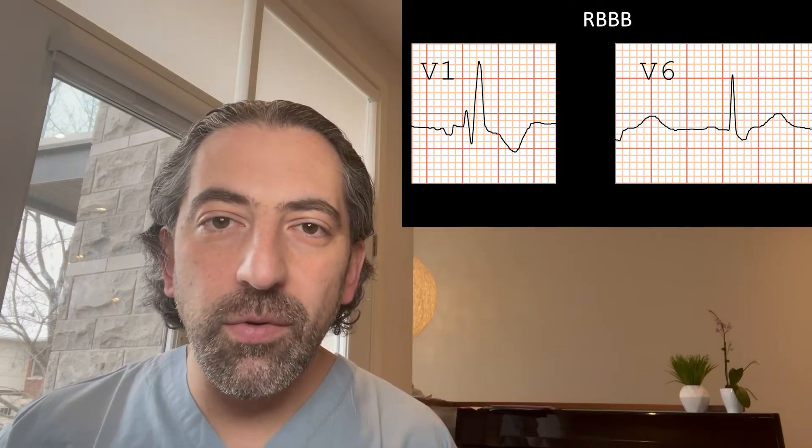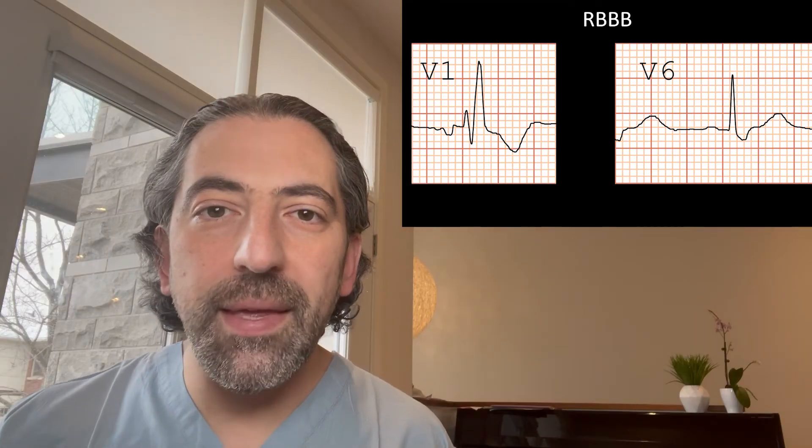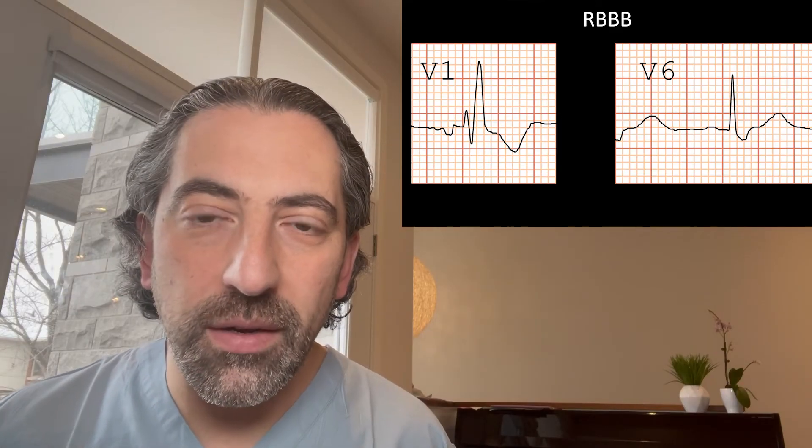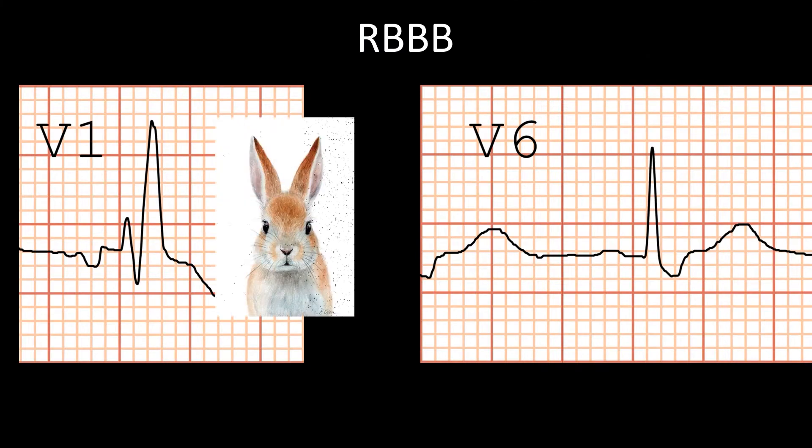At times people refer to rabbit ears in V1 — this is looking at the r and R prime in V1 that look like rabbit ears. Keep in mind the left ear is usually bigger than the right ear.